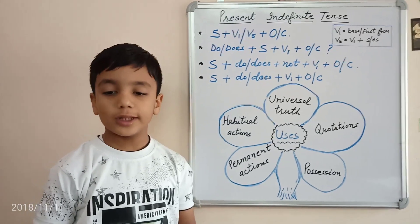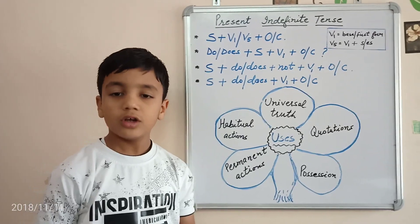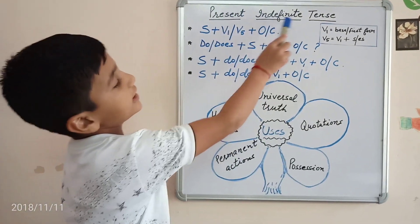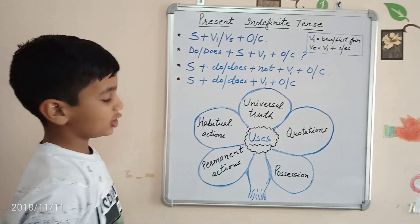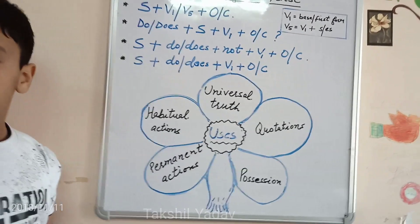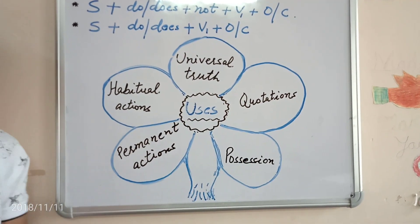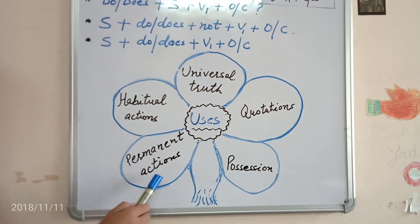Now, as we know that every tense has many uses of its own. So, some uses of Present Indefinite Tense are: Permanent Actions, Habitual Actions, Universal or General Truth, Quotations, Position or Ownership.